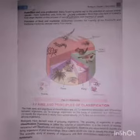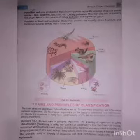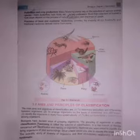The second aim is to arrange organisms on the basis of their similarities and differences. The third is to identify them. The fourth is to understand the evolutionary relationships between organisms.